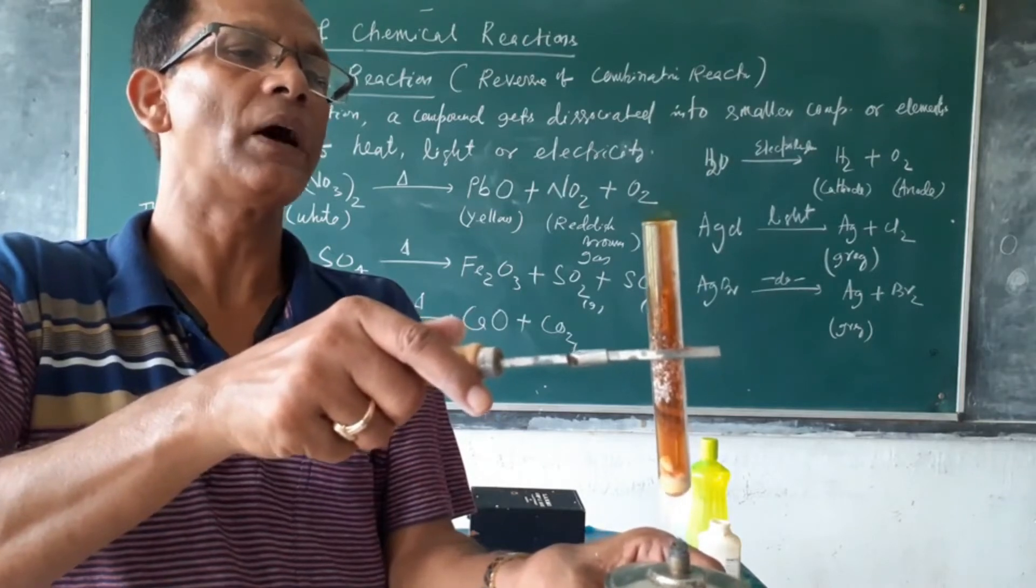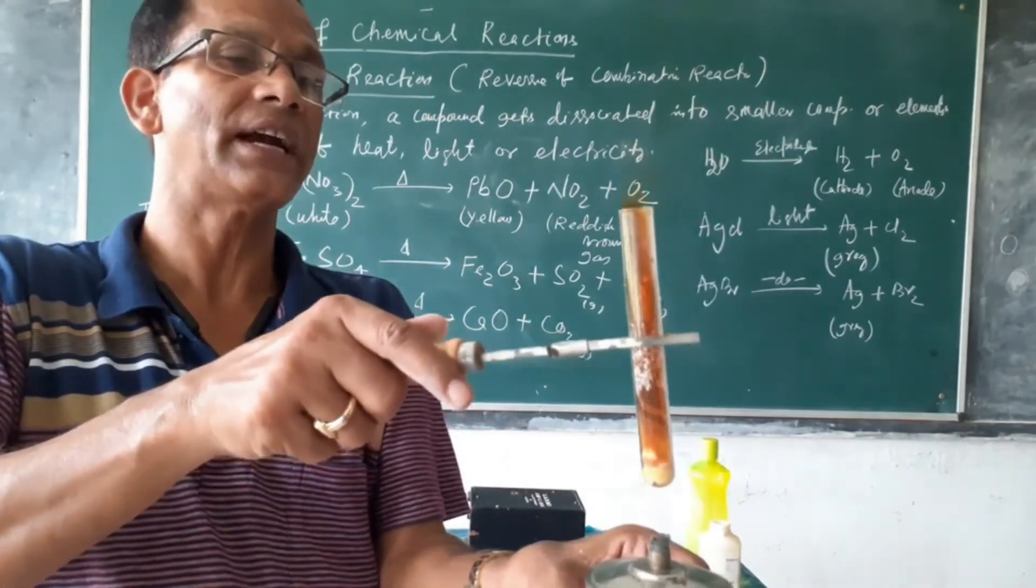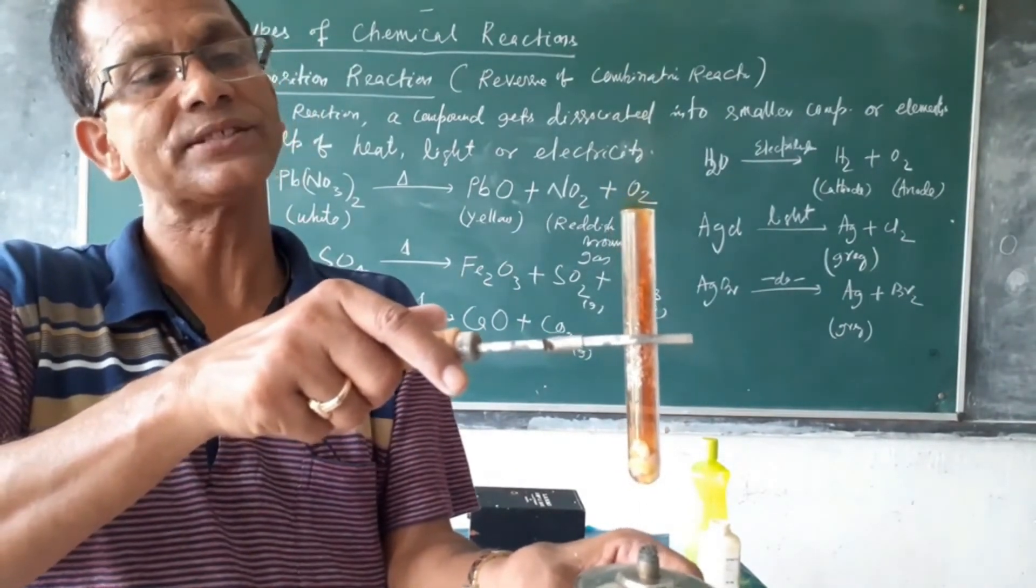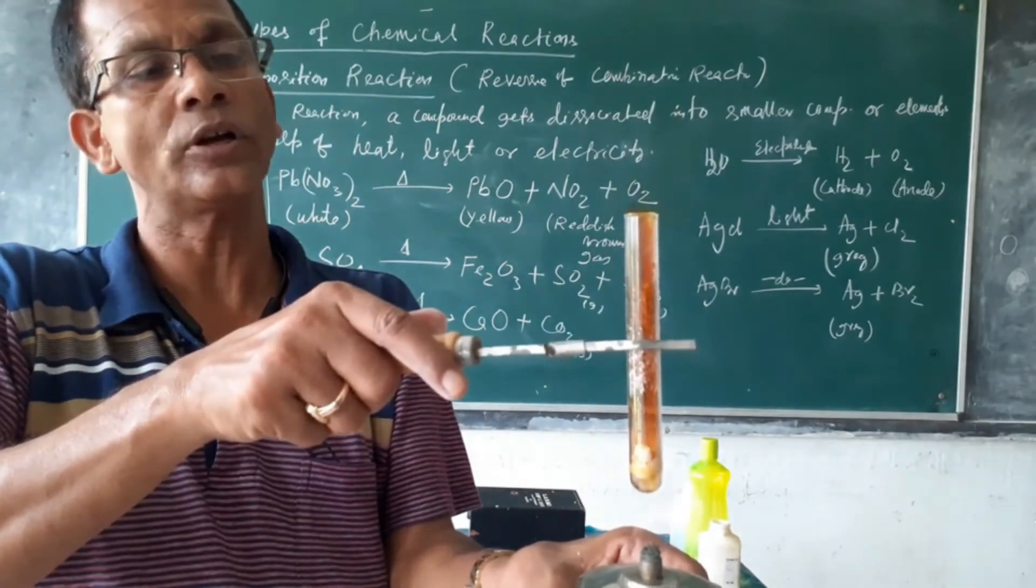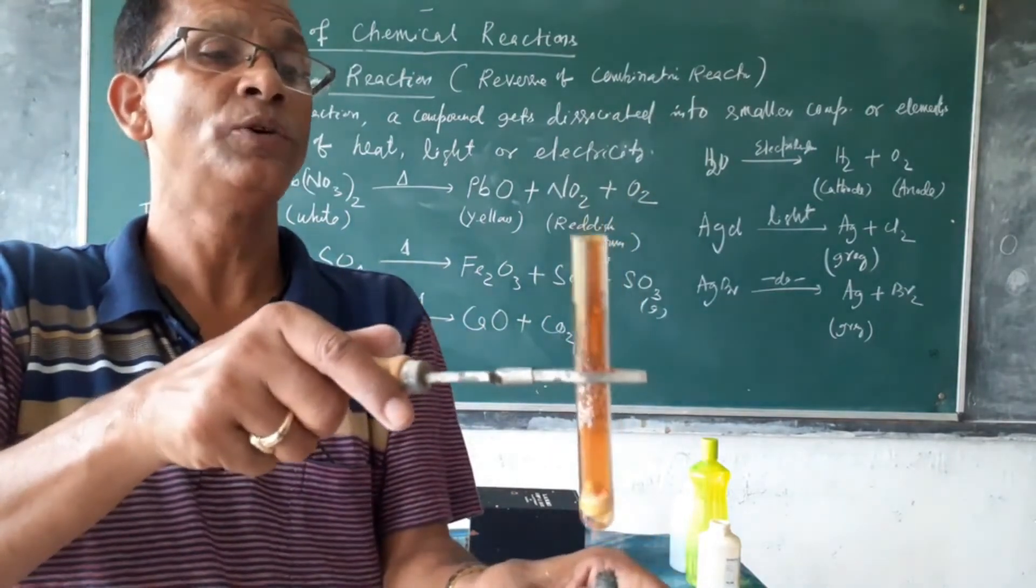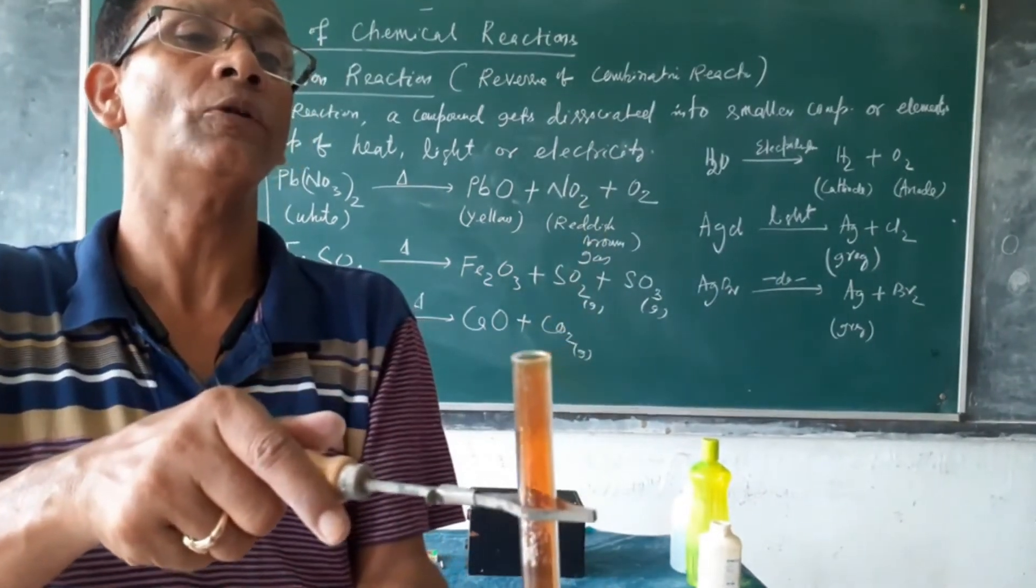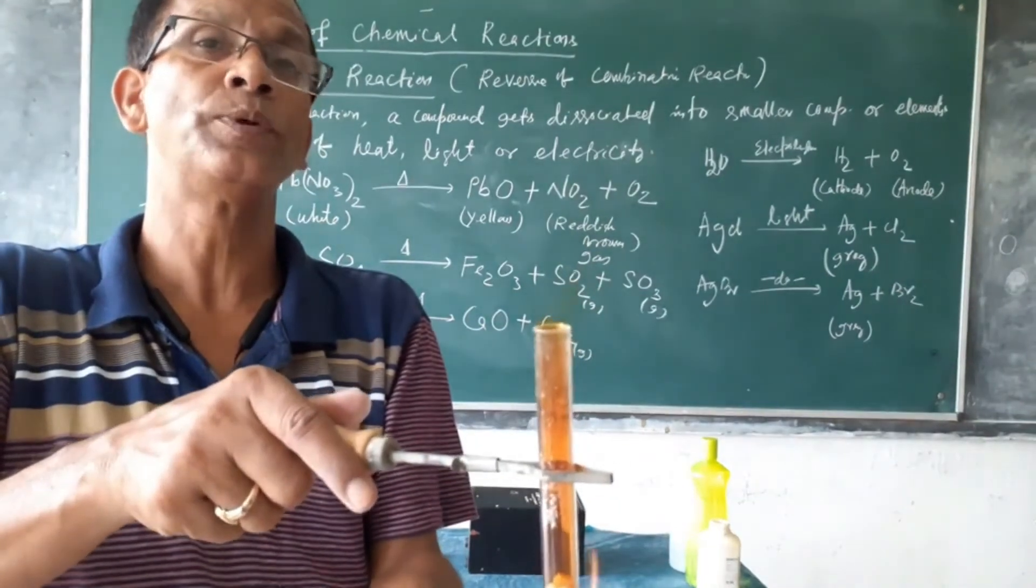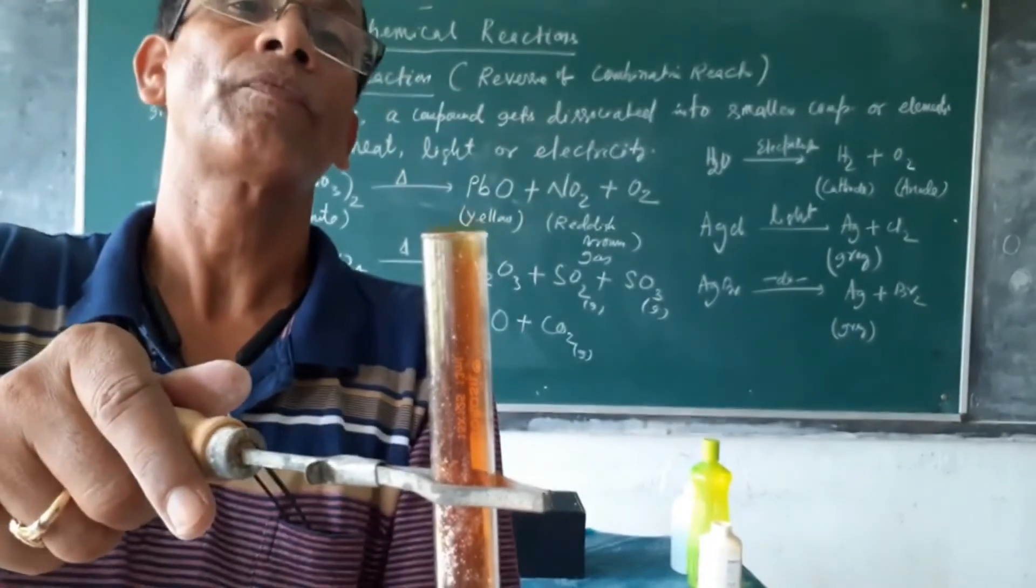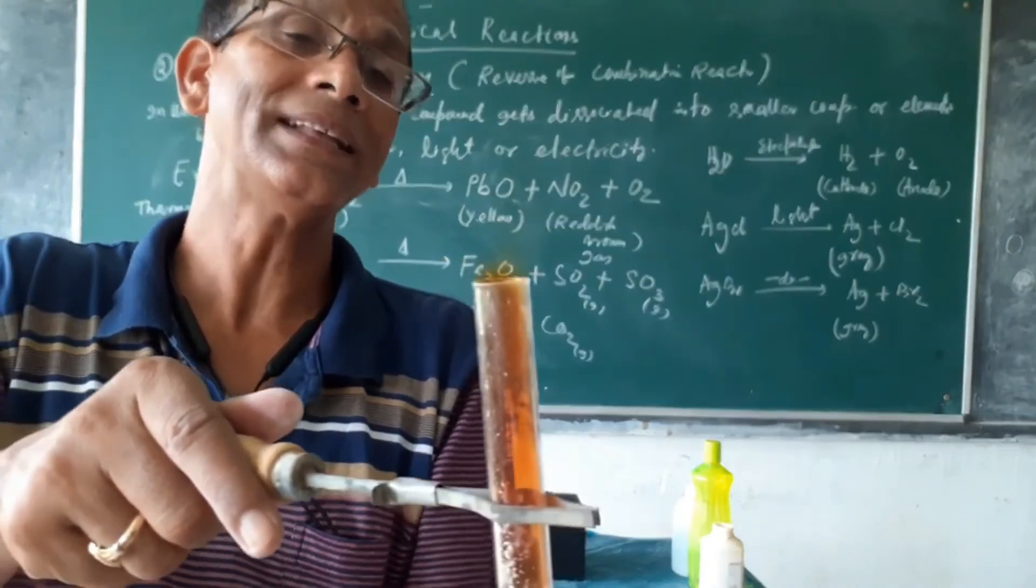You see how reddish brown gas is formed. This gas is called nitrogen dioxide. This is nitrogen dioxide and the color of this solid that remains in the test tube is yellow color. The gas produced is reddish brown. Just you see mouth of the test tube. Reddish fumes are formed. Reddish fumes are producing. This reddish fumes are formed as NO2.